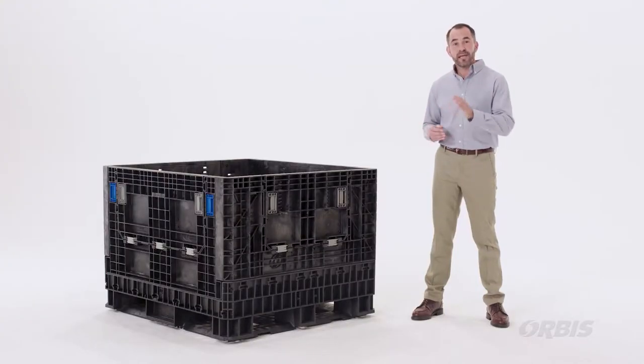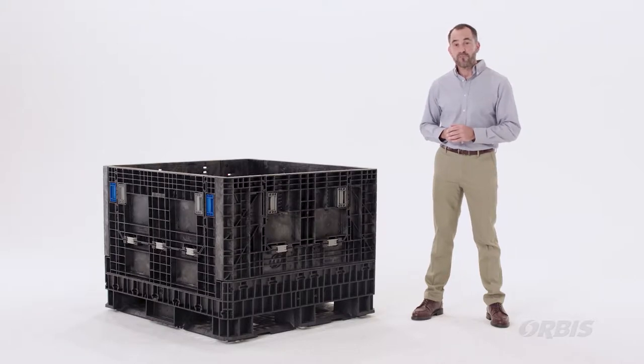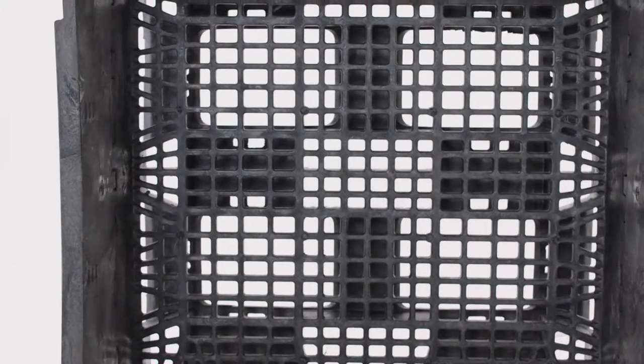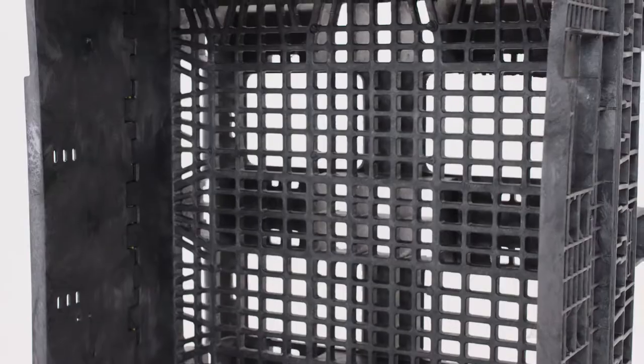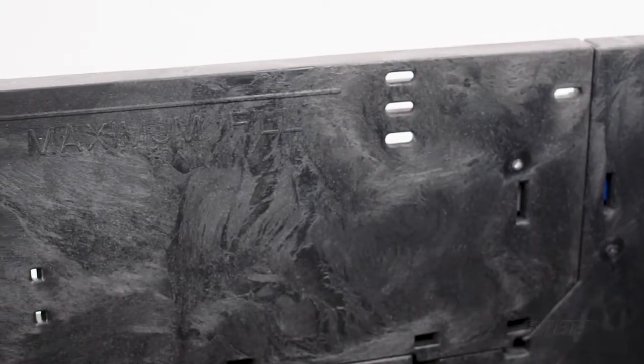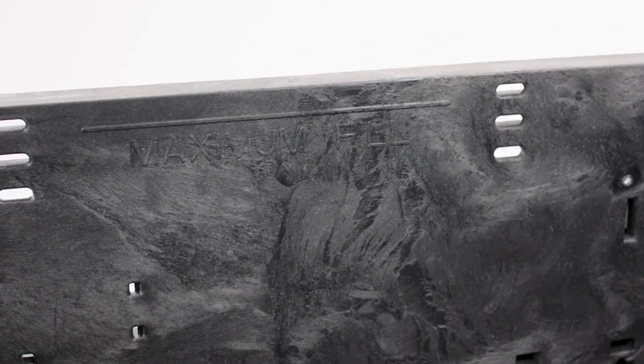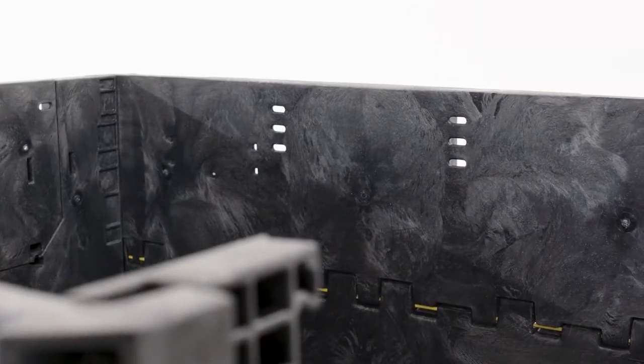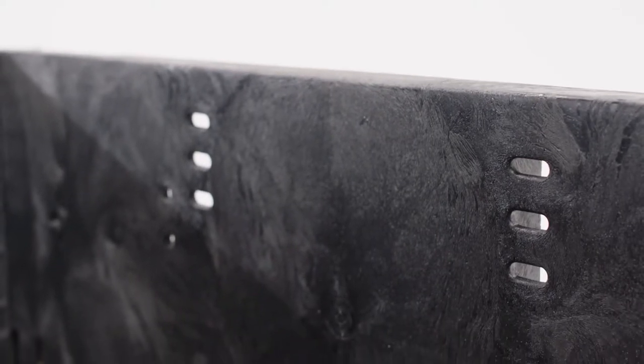Looking inside the bin, the HDR 4845 has a ventilated base allowing the bin to be cleaned easily. For quick reference, a maximum fill line is molded into the sidewalls of the container. There are banding slots located in the sidewalls which provide an opportunity to secure uneven loads.